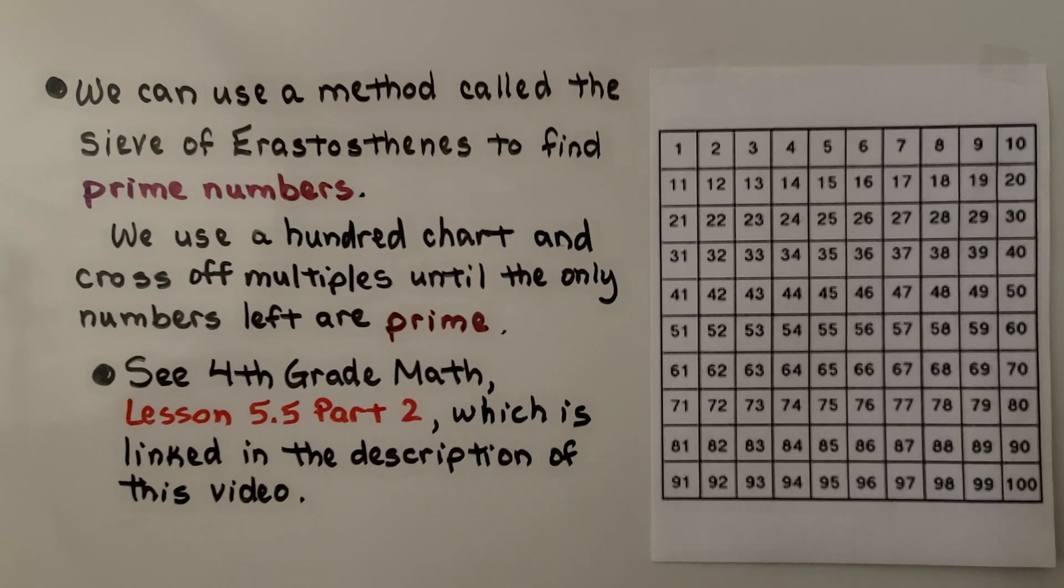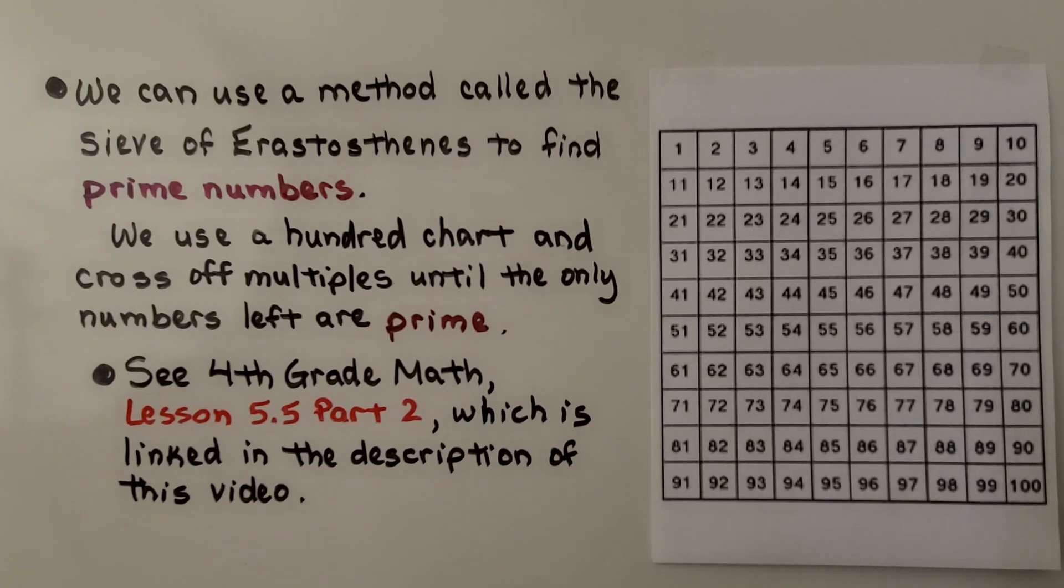We can use a method called the sieve of Eratosthenes to find prime numbers. We use a 100 chart and cross off multiples until the only numbers left are prime. You can look in the description of this video, and there's going to be a link to 4th grade math lesson 5.5 part 2. And we did this. And you'll have a list of prime numbers, which will be very helpful. You can also just make a list of the prime numbers yourself, so that as you're doing the prime factorization, you have them right next to you.